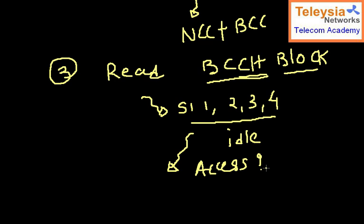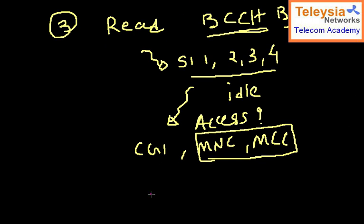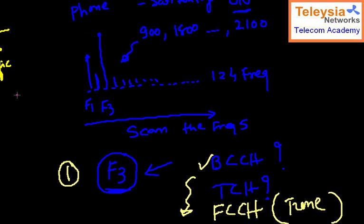This system information contains details about how you can access the network — what power you should transmit, how many times you can access if there is no answer from the base station, cell identity, location area, and PLMN. You open this information, find the CGI, and check the MNC and MCC, then compare with your SIM card's home PLMN. If they don't match, you skip this frequency and move to the next best, such as F1.